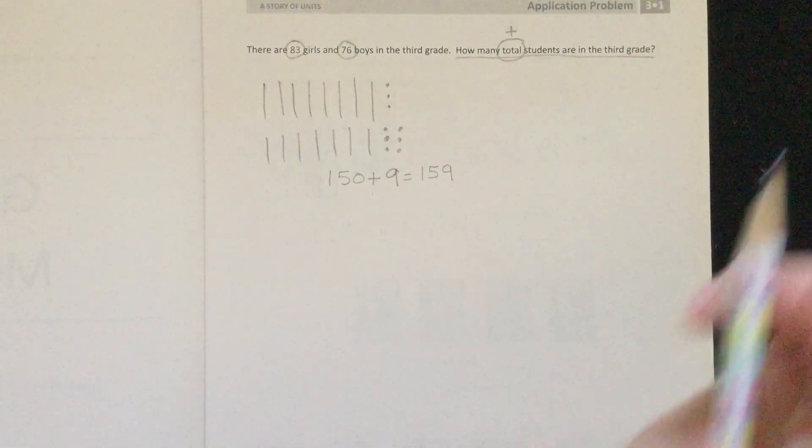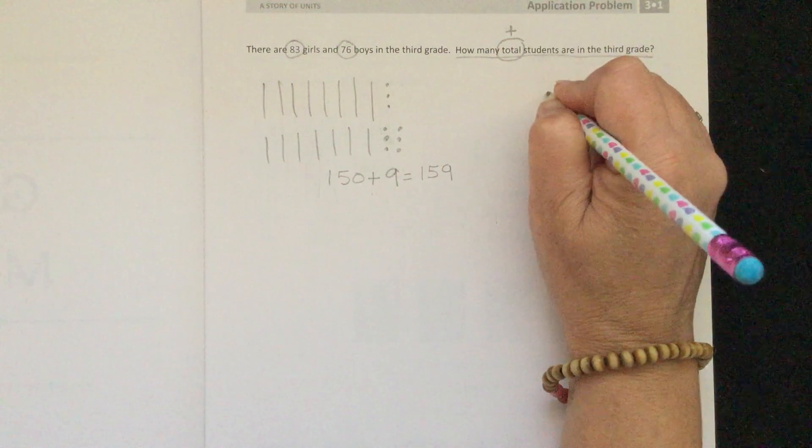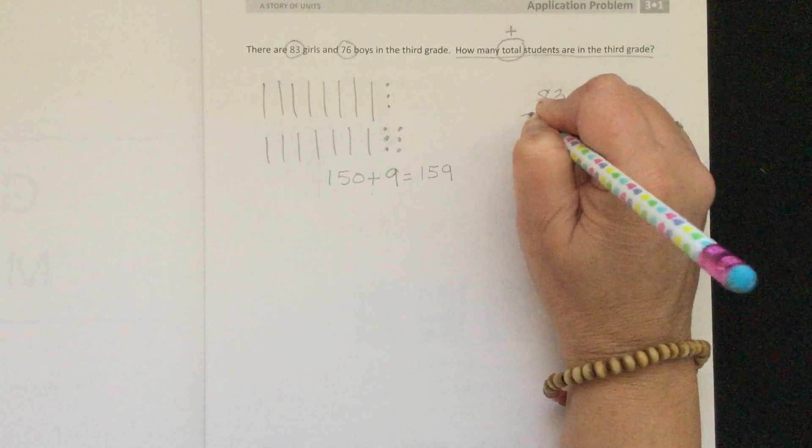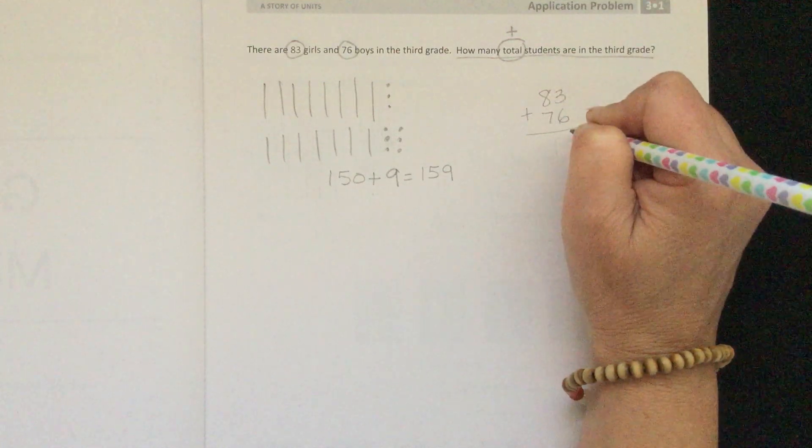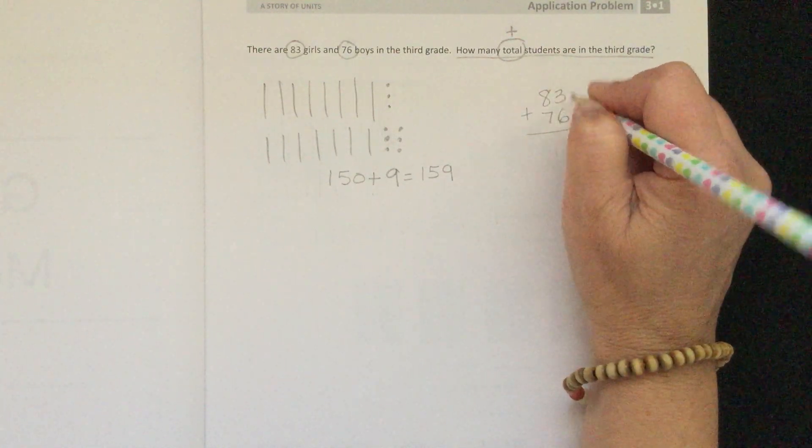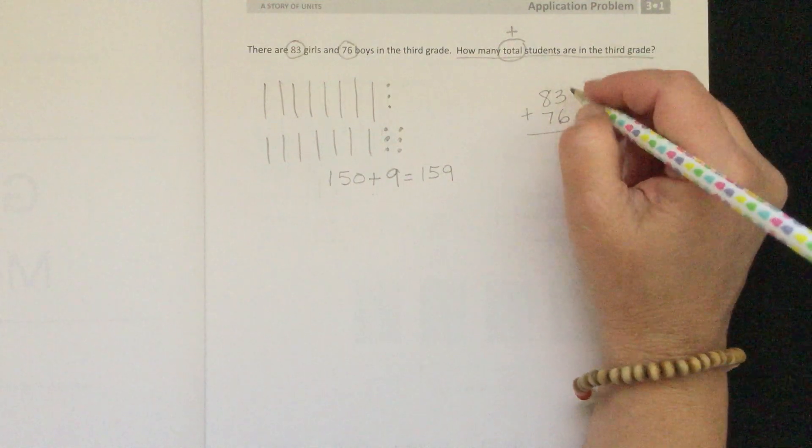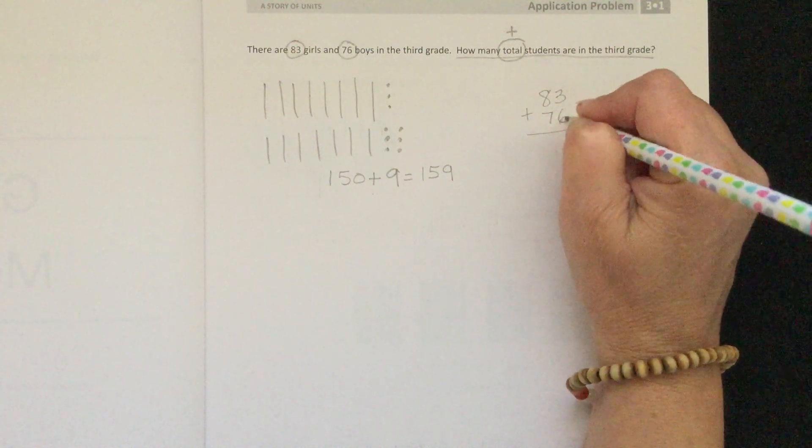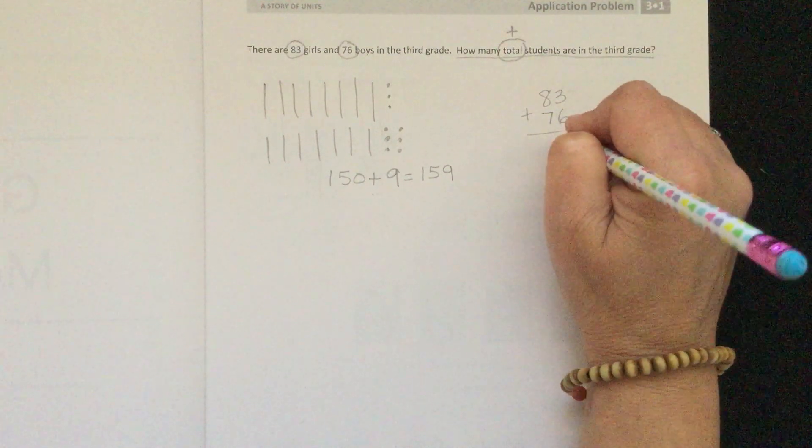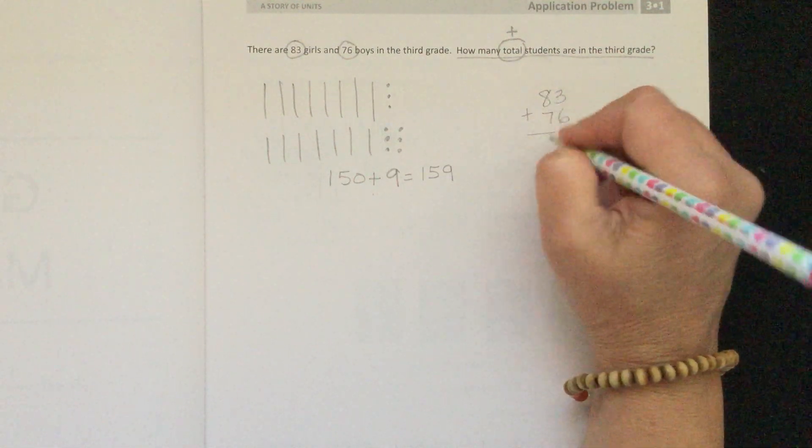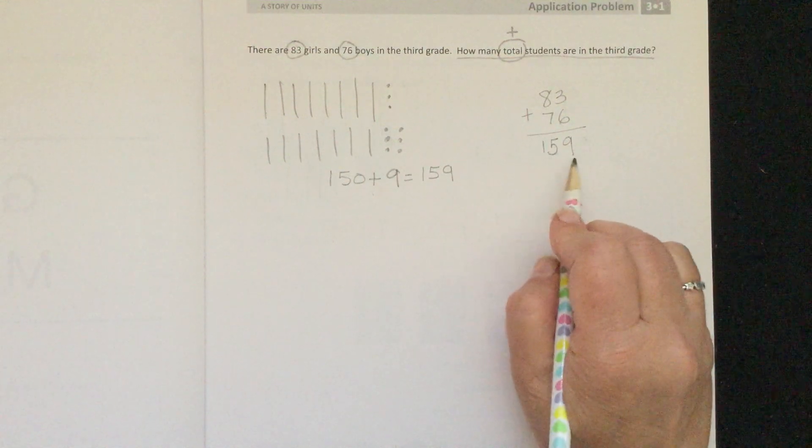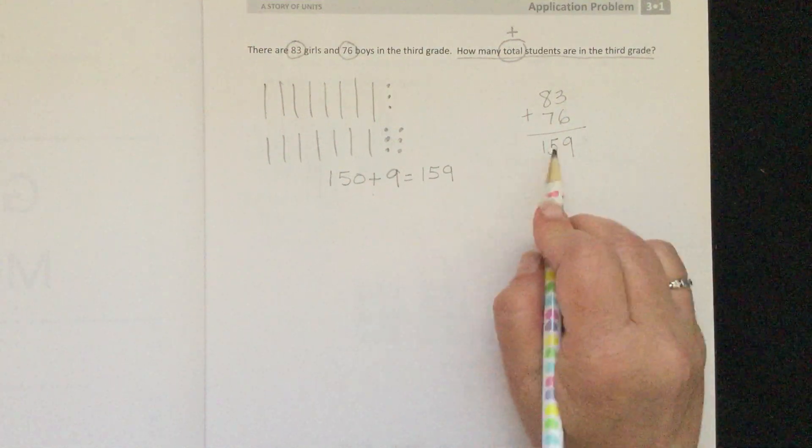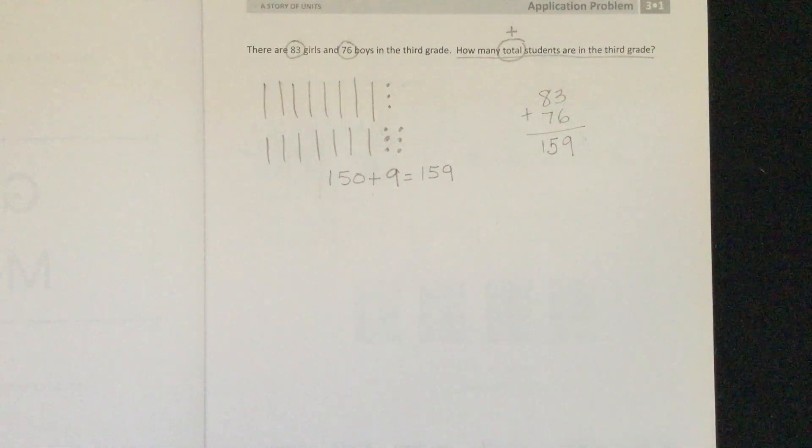We also could have solved it vertically. We can write 83 plus 76, and then we'll just go straight down starting in the right in the ones column. 3 plus 6 equals 9. 8 plus 7 equals 15. So we have 159.